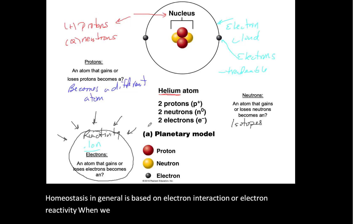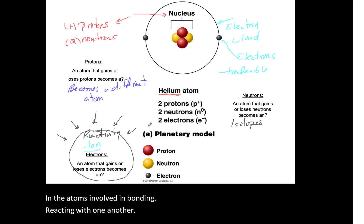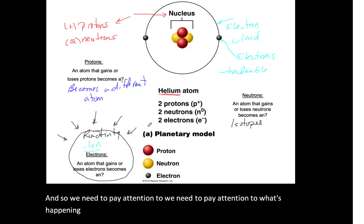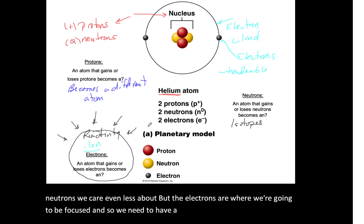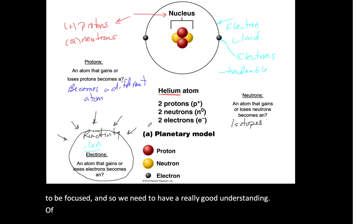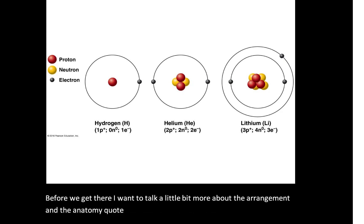When we talk about chemical bonding, what we're referring to is how the electrons in the atoms involved in bonding are reacting with one another. We need to pay attention to what's happening within the electrons. Protons, we don't care too much about. Neutrons, we care even less about. But the electrons are where we're going to be focused, so we need a really good understanding of electron reactivity.